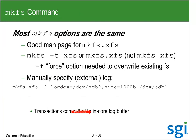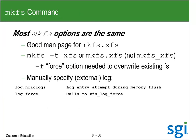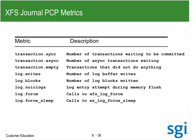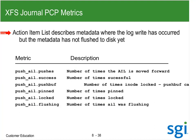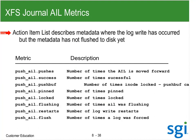Here are the journaling statistics: number of transactions waiting to be committed, asynchronous transactions, and transactions that did nothing. Number of log buffer writes and blocks written — this is the memory-to-disk path. Log entry attempt during a memory flush — having more buffers allows interleaving. The WCHAN on those code fives is also indicating XFS waiting for a log. The action item list (AIL) is metadata where the log write has occurred but the metadata itself is not flushed to disk yet. We were seeing the AIL daemon pretty high there.